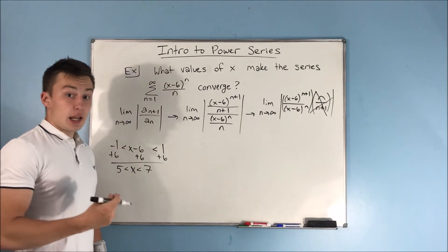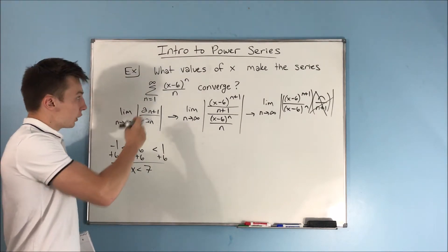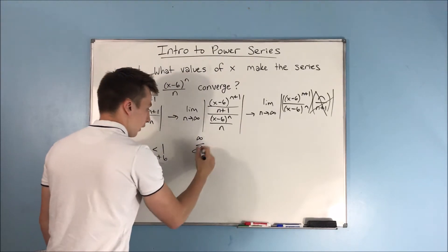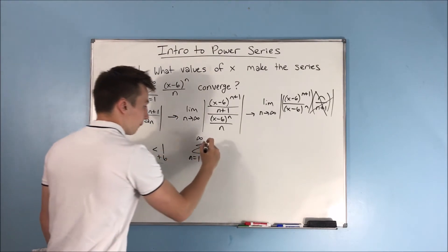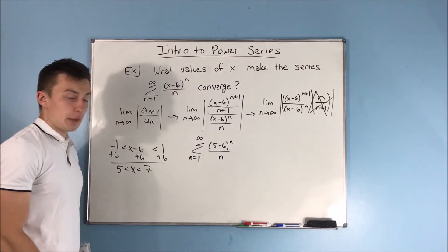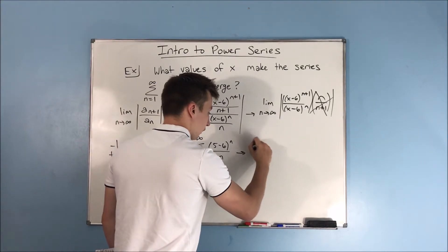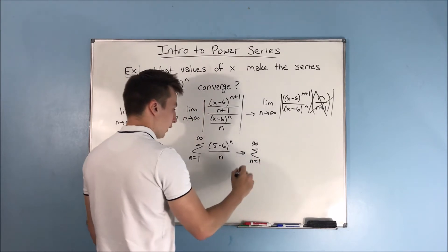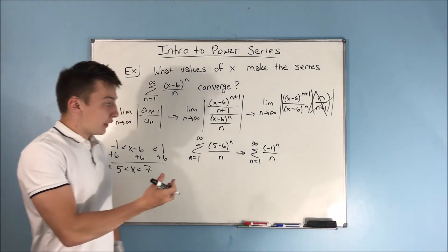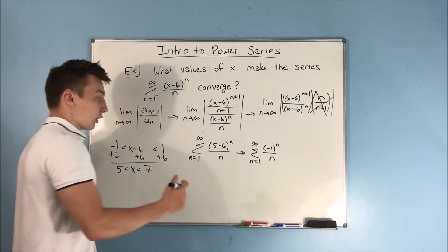We need to check those endpoints to see if they converge, to know whether to include 5 or 7. Plugging in x equals 5: we get the sum from n equals 1 to infinity of (5 minus 6) to the n over n, which gives the sum from n equals 1 to infinity of (negative 1) to the n over n. This is the alternating harmonic series, and we know it converges by the alternating series test.